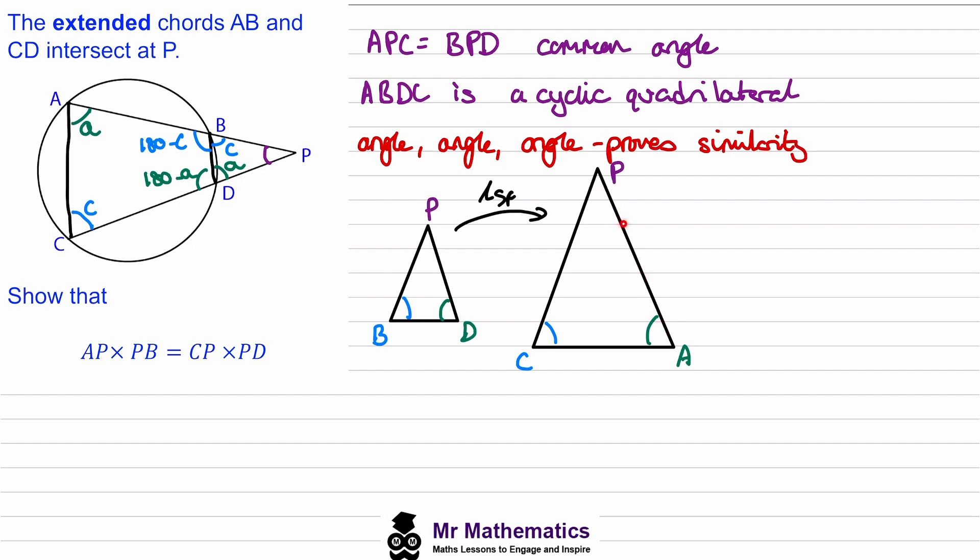as a big length divided by its corresponding little length. So AP divided by PD will be exactly the same if we use these two lengths, PC and PB. So C